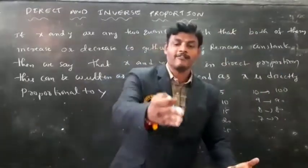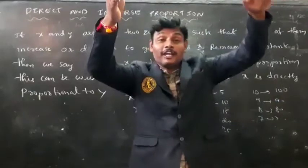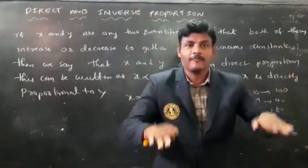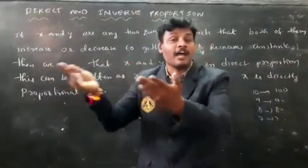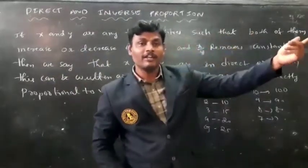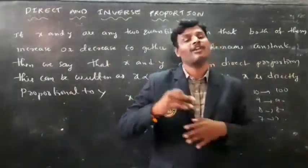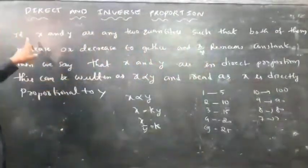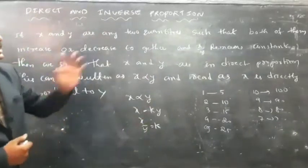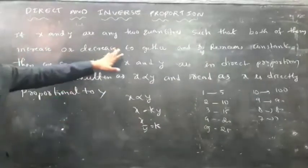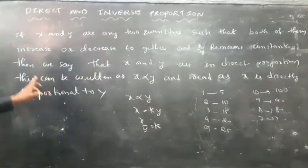In these two examples, both quantities are increasing and both quantities are decreasing. If one quantity increases, another quantity also increases. If one quantity decreases, another quantity also decreases. This type of proportion is called direct proportion. Both quantities will increase or decrease together. If x and y are any two quantities such that both of them increase or decrease together.